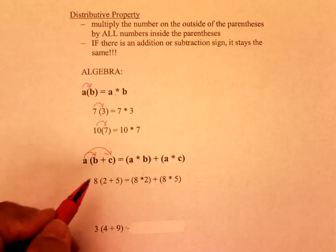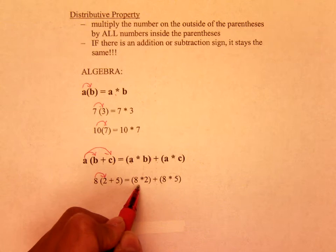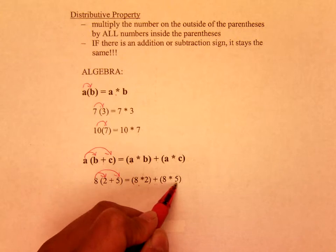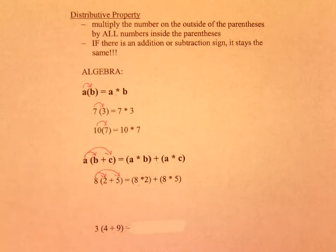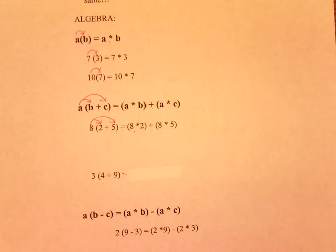In numbers, you would see it as this. 8 times 2, you write it in parentheses, plus 8 times 5, and you rewrite it. Go ahead and try the 3 parentheses 4 plus 9. When you're ready, you can go ahead and push play.